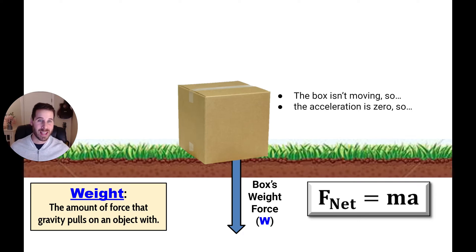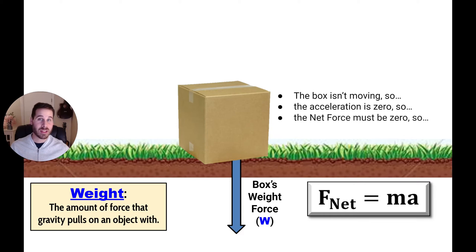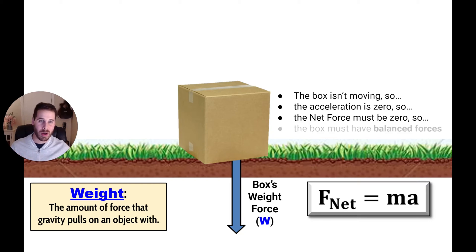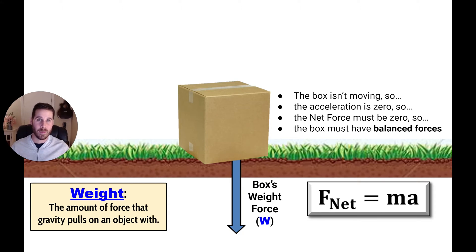If there's no motion, that means the object is not accelerating — it's not getting faster and faster. So in this case, acceleration is equal to zero. Looking at Newton's second law, if a equals zero, then the net force on that object must also be equal to zero, because zero multiplied by any amount of mass equals zero net force. So the final conclusion is that the box must have balanced forces acting on it.